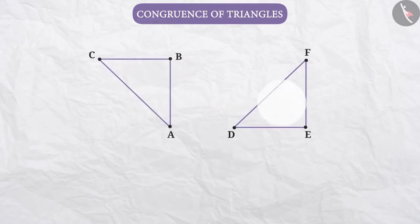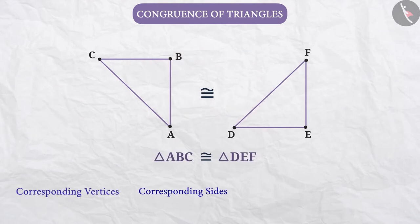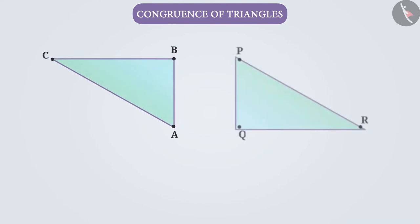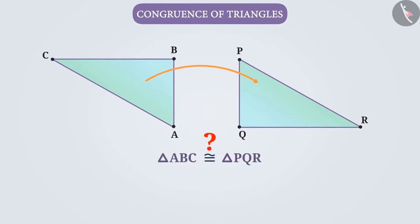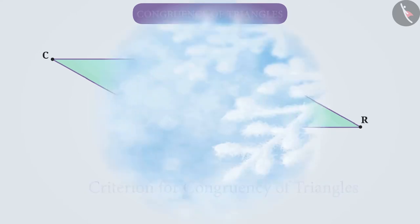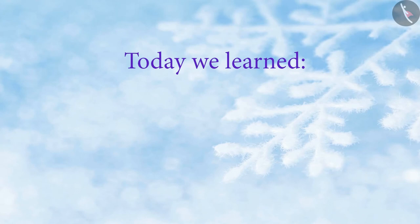Now suppose triangle ABC is congruent to triangle DEF. Can you tell what are the corresponding vertices, corresponding sides, and corresponding angles in both triangles? Try it yourself. In each case, we cannot find out whether both triangles are congruent or not by placing one triangle on the other. In such a situation, the criteria of congruency of triangles help us — we will learn them in the upcoming video. So today we learnt the congruency of triangles. In the next video, we will see examples related to congruency.